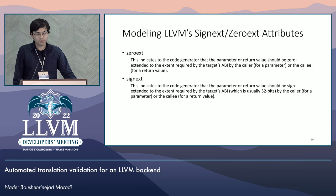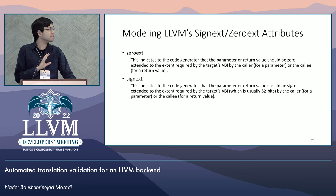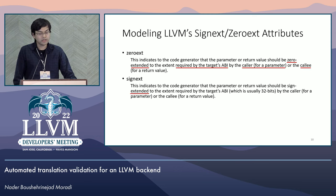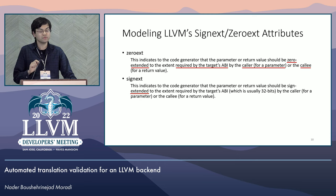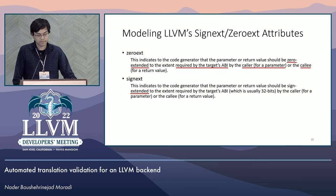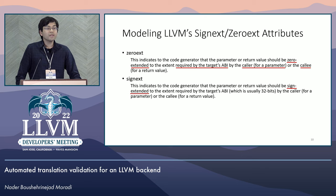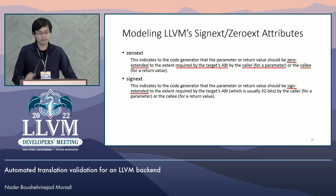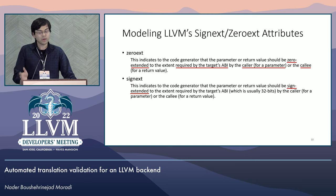Now I want to talk about modeling the signext and zeroext attributes in more detail. Looking at a snippet taken from the langref, we see that the zeroext attribute can be added to the input parameters or the return value of a function. When added to a parameter, the code gen is instructed that the caller zero-extends to the extent required by the target's ABI. When added to the function's return value, the callee should extend its return value with zero extension. The signext attribute works similarly except it sign-extends instead of zero-extends. What's interesting about these attributes is that they don't impact the semantics at the LLVM IR level, but instruct the code gen. Hence, when doing back-end verification work, we need to correctly model them.